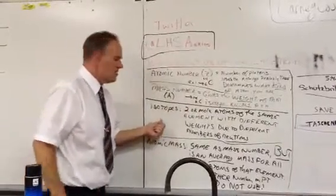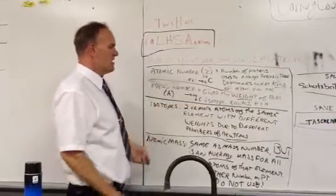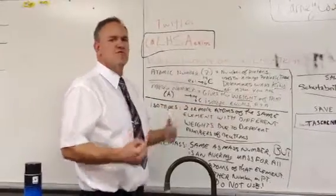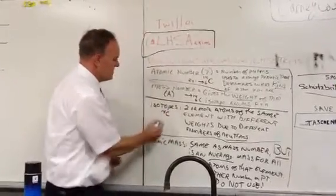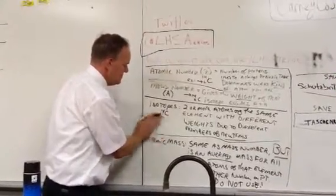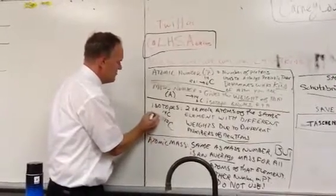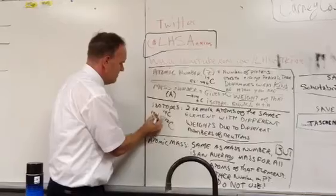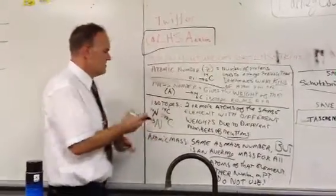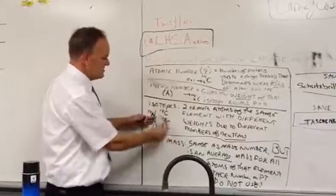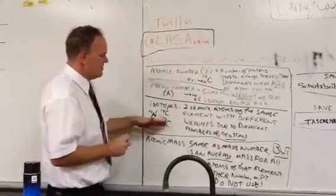Isotopes, again, are two or more atoms of the same element with different weights due to different numbers of neutrons. Carbon-14, carbon-12, nitrogen-14, nitrogen-13. These are all different examples. These are isotopes of one another, these are isotopes of one another. The same element with different weights.